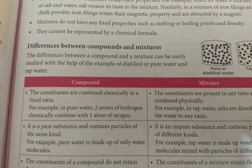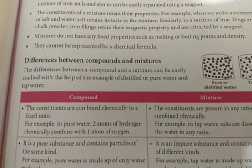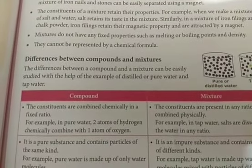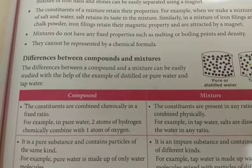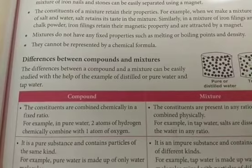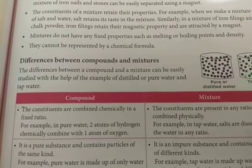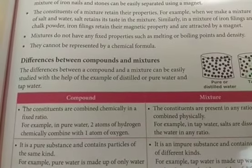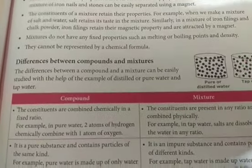Good morning students. In class 7 chemistry chapter 3, till now we have learned the definition of elements, compounds, and mixtures. We have seen the types of different mixtures, the properties of mixtures, and the properties of elements and compounds as well.